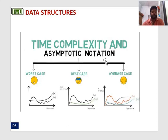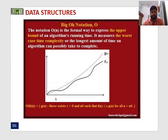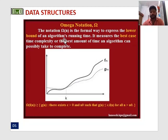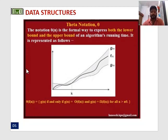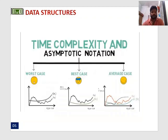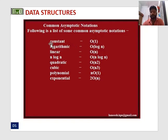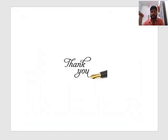This is a simple illustration to understand time complexity and asymptotic notation. Big O notation is the formal way to express the upper bound; Omega notation expresses the lower bound; and Theta notation expresses both. Some common asymptotic notations are: O(1) for constant, O(log n) for logarithmic, O(n) for linear, O(n log n), O(n²) for quadratic, O(n³) for cubic, O(n^k) for polynomial, and O(2^n) for exponential. I hope you understand asymptotic notations.